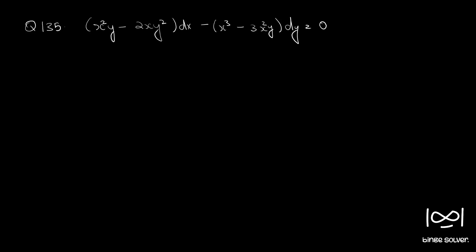Question number 135: x squared y minus 2xy squared dx minus x cubed minus 3x squared y dy equals 0. This is the last question from the section on solving homogeneous equations.